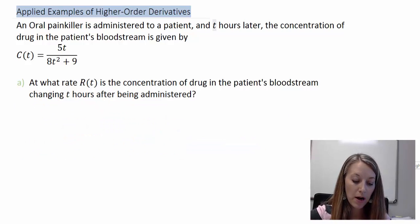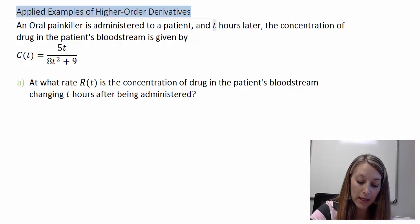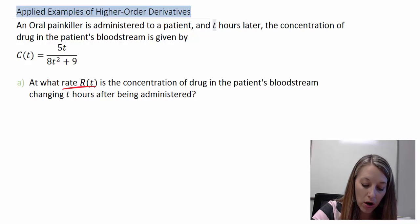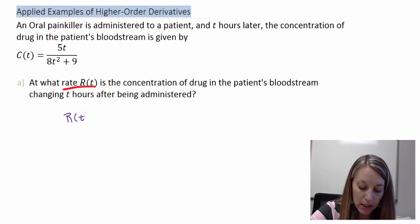Starting with Part A, at what rate R of T is the concentration of drug in the patient's bloodstream changing T hours after it's being administered? So, we see at what rate or given by R of T is what we're looking for. So, we want R of T, which is our rate equation. Well, that comes from C prime of T in this example.